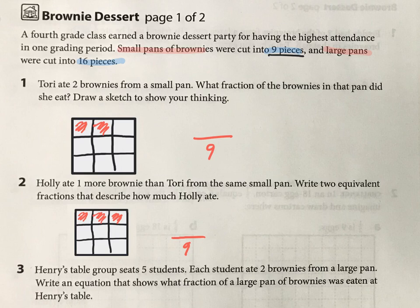But what is an equivalent fraction to describe what Holly ate? Well, if I cut up this tray this way into three pieces, you can see that she ate a piece out of three. And how many pieces out of three did she have?